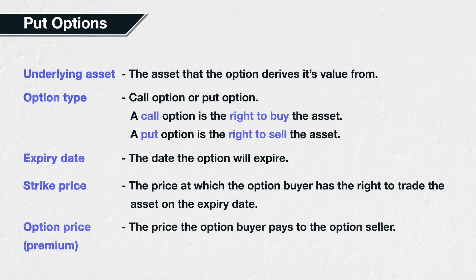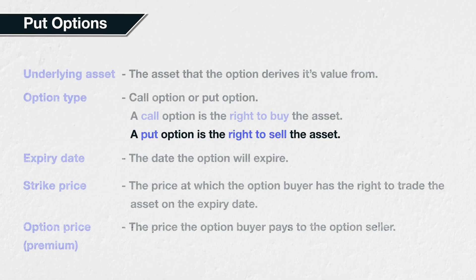In section 5, we will be focusing specifically on the put option type. A put option gives the option buyer the right to sell the underlying asset at the strike price on the expiry date. Be sure you understand that sentence in its entirety before moving on. It is the buyer of a put option that has the right to sell the underlying asset, meaning it is the buyer of the put option who benefits from the underlying price falling.